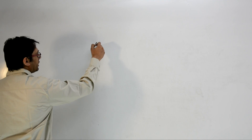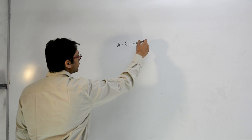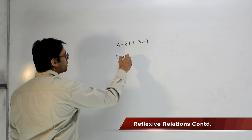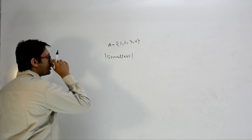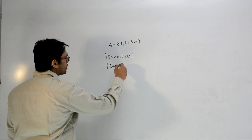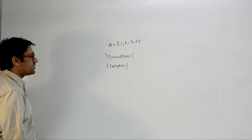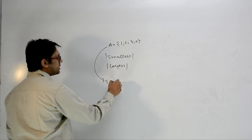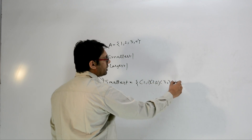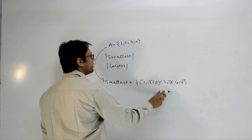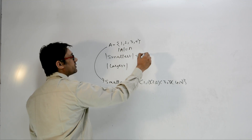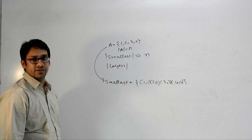We have the set A containing elements 1, 2, 3, 4, which we have already discussed. What is the cardinality of the smallest reflexive relation possible over this set A? The smallest reflexive relation is going to contain (1,1), (2,2), (3,3), and (4,4). This is the smallest reflexive relation possible over A. So if the cardinality of set A is N, then the smallest reflexive relation is going to have N elements.